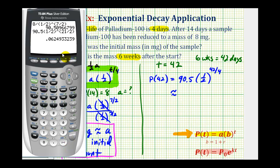So notice how there's only approximately 0.06 milligrams remaining after six weeks or 42 days.